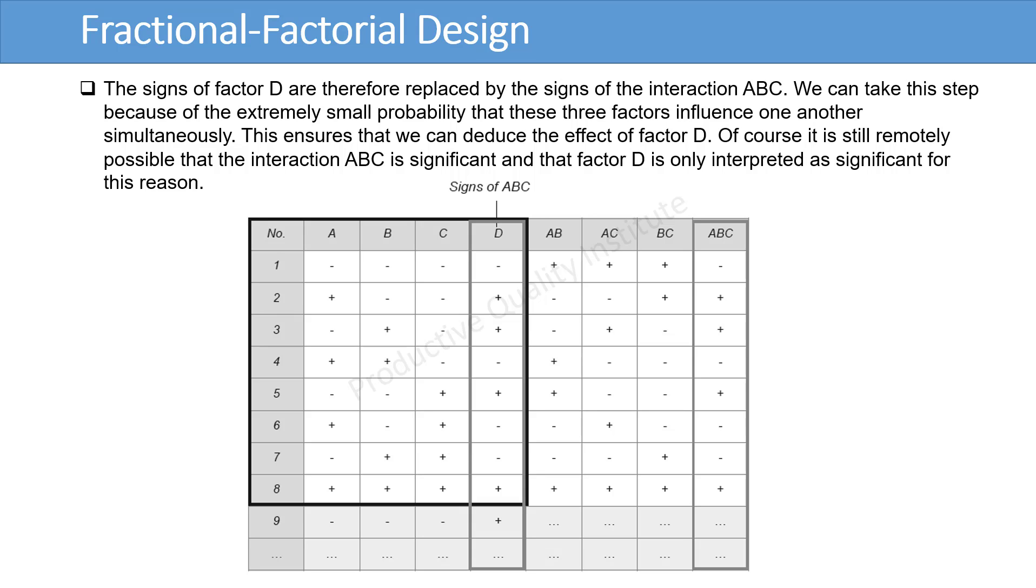Therefore, the signs of factor D are replaced by the signs of the interaction ABC. We can take this step because of the extremely small probability that these three factors influence one another simultaneously. This ensures that we can deduce the effect of factor D. Of course, it is still remotely possible that the interaction ABC is significant and that factor D is only interpreted as significant for this reason.